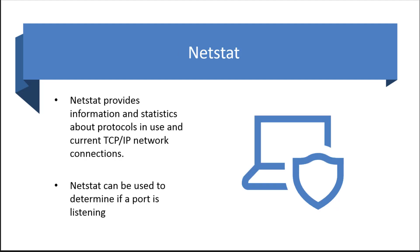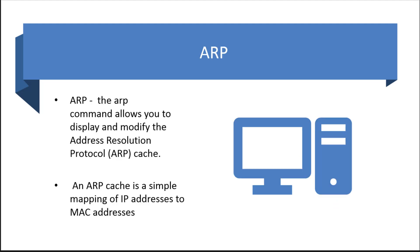Netstat is focused on providing statistics about the network and can also be used to determine if a port is listening. ARP, or Address Resolution Protocol, is typically kept in a cache and is used to provide routing information, mapping addresses to what is called a MAC address, which is covered in another module.